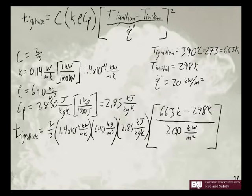20 kilowatts per meter squared squared. We'll plug that in our calculator. 2 divided by 3 times 1.4 times 10 to the negative fourth times 640 times 2.85 times parentheses 663 minus 298, close parentheses, divided by 20, close quantity parentheses, raised to the second power. And so that is equal to 56.7 seconds.